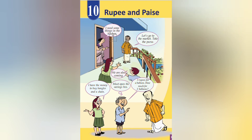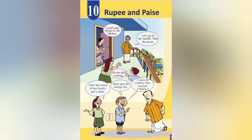I need some things in the kitchen. Let me go to the market and take a purse. I have money to buy bangles and a chain. Let's open the savings box.